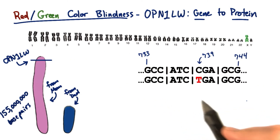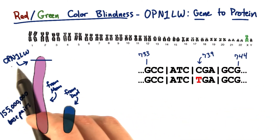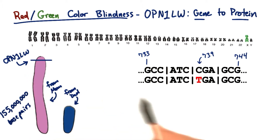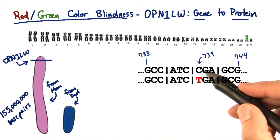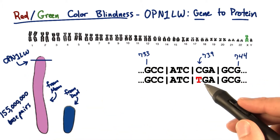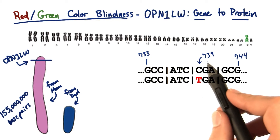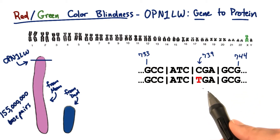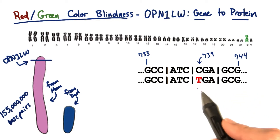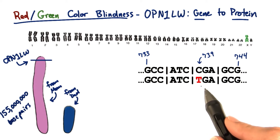Now, one allele of the OPN1LW gene contains a C — a cytosine to T, to thymine — mutation at position 739 of the coding region. I've highlighted the change in red here.